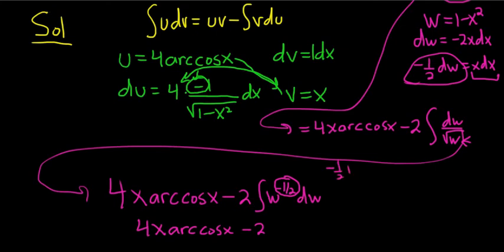So negative 1 half plus 1 is 1 half, because it's negative 1 half plus 2 halves, which is 1 half. So it's w to the 1 half over 1 half, and then plus our c.